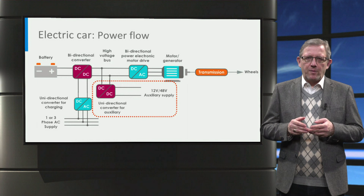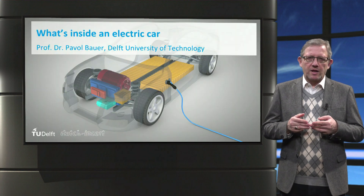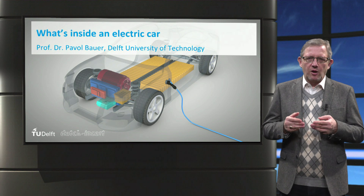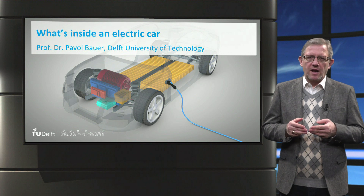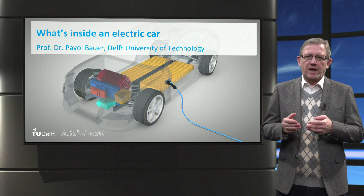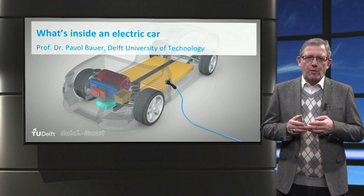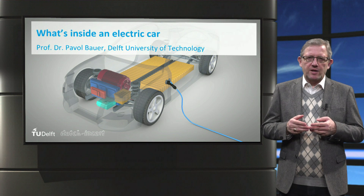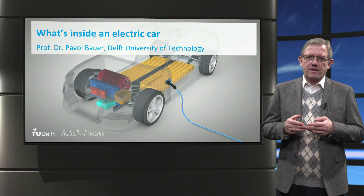To wrap up, the traction battery, the electric motor and the power electronics play a key role in the operation of an electric vehicle. Since power is exchanged between these components electrically using cables, it provides great flexibility in the design of the car. This flexibility is not possible with cars with a mechanical drivetrain, due to the large size and weight of the mechanical components.